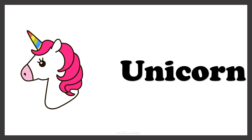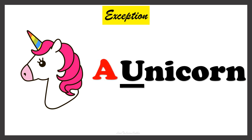Now can you guess the name of this picture? Yes, this one is UNICORN. We have to find the article that comes before the word UNICORN. The word UNICORN starts with the letter U, which is a vowel. But here we have an exception — the word UNICORN starting with the letter U sounds similar to Y, as in Yellow. So we have to use the article A in front of the word UNICORN. So we say it as A UNICORN.